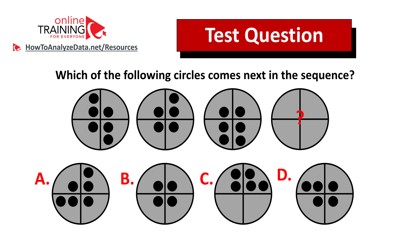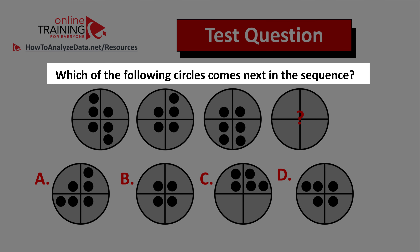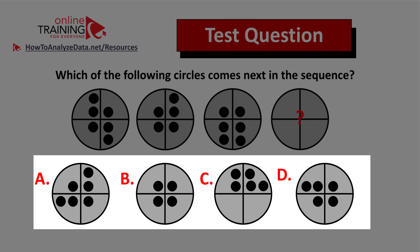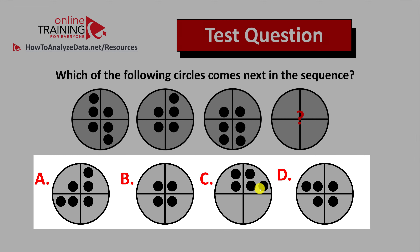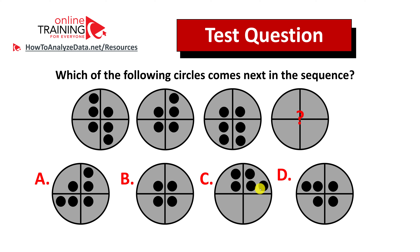Here's a tricky question you can try to solve on your own. Which of the following circles comes next in the sequence? You have four different choices: A, B, C, and D. My advice: always look for patterns. Give yourself 10 to 15 seconds — pause the video to see if you can come up with the solution. If you figured out the answer, feel free to post your answer and rationale in the comments so I can give you feedback. I'll also post a detailed answer in a future video, so consider subscribing to learn more.